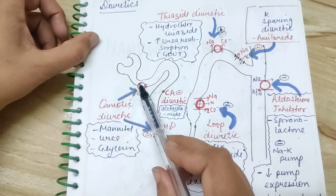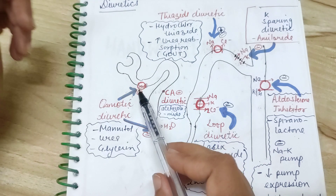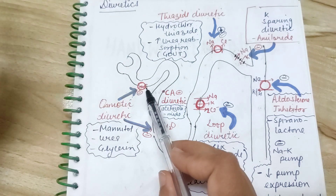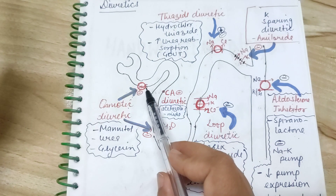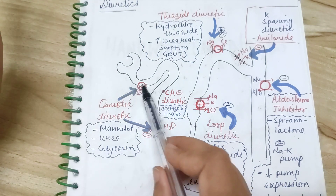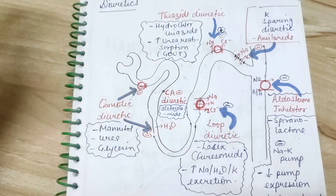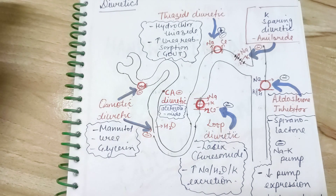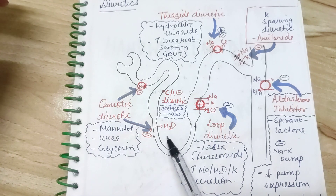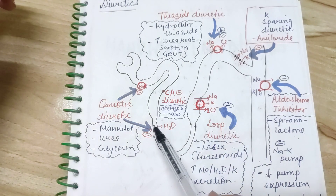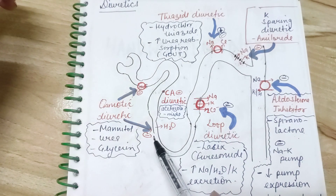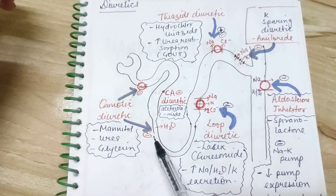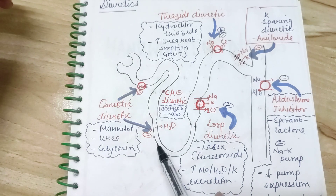Starting with osmotic diuretic: it acts on the PCT. The channel present here is the sodium-hydrogen exchanger, and that channel is inhibited by osmotic diuretic. The example is mannitol. It also inhibits water reabsorption in the descending loop of Henle.